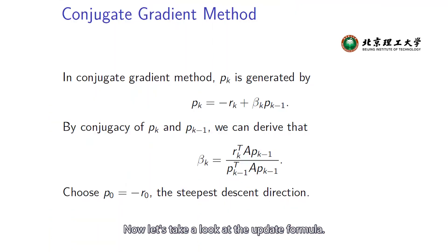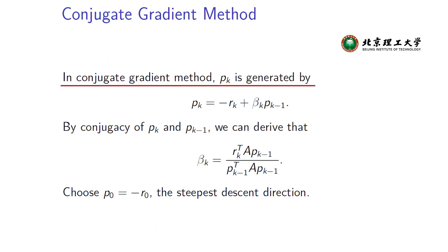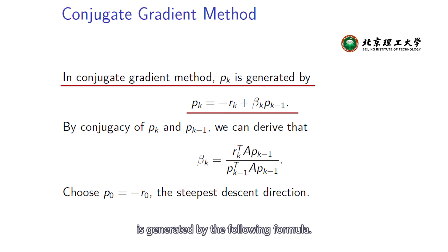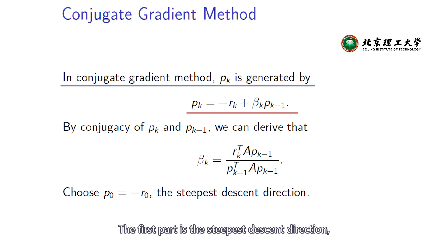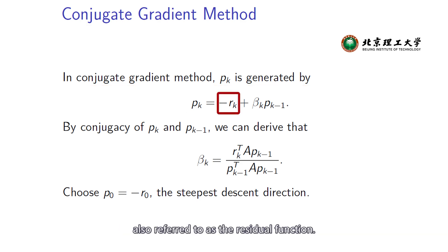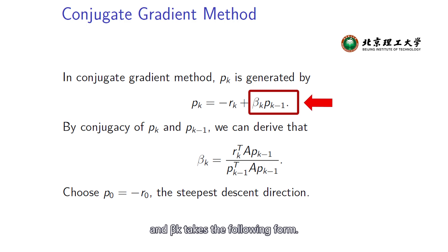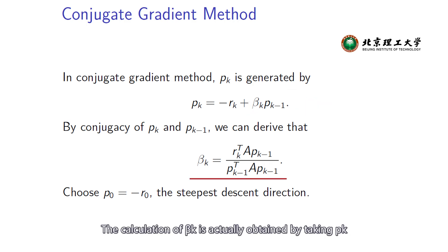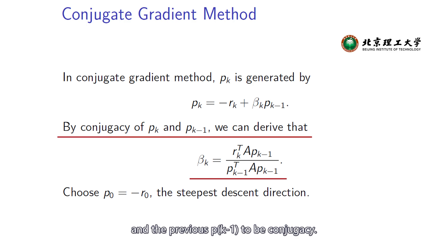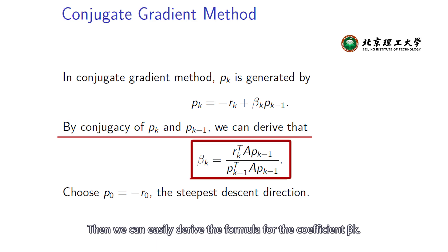Let's take a look at the update formula. In the conjugate gradient method, the search direction pk is generated by a formula that is a linear combination of two parts: the first part is the steepest descent direction, also referred to as the residual function, and the second part is the previous conjugate direction. Before the previous conjugate direction, we have a coefficient beta k, whose calculation is obtained by taking pk and the previous pk-1 to be conjugate.